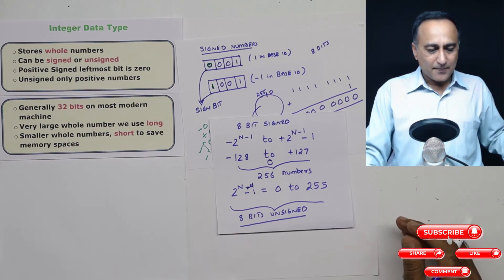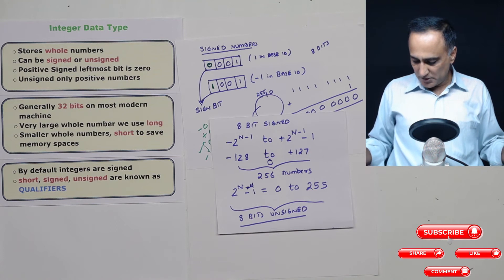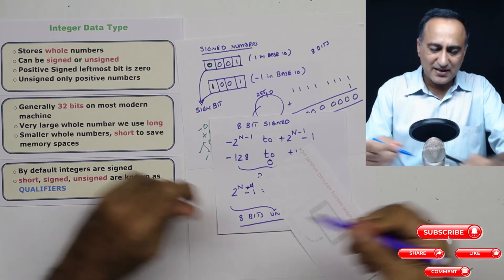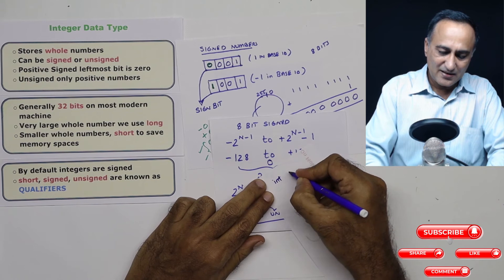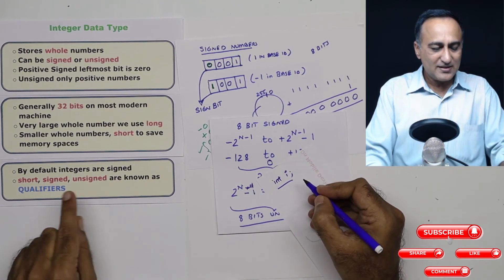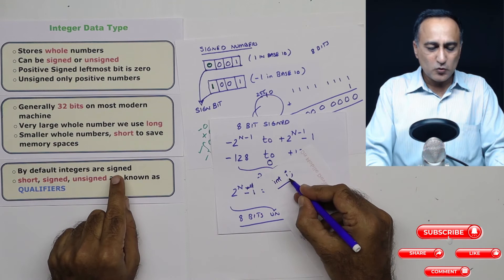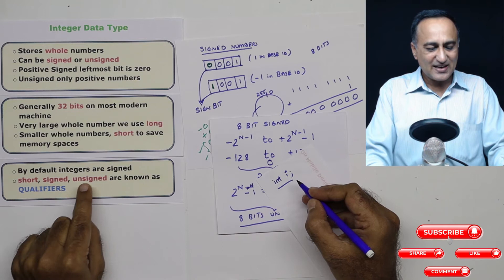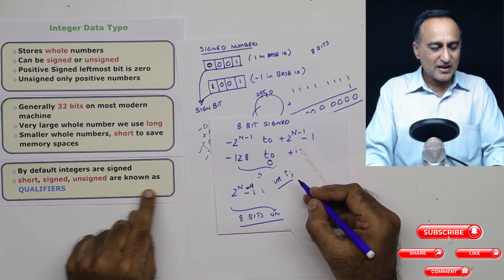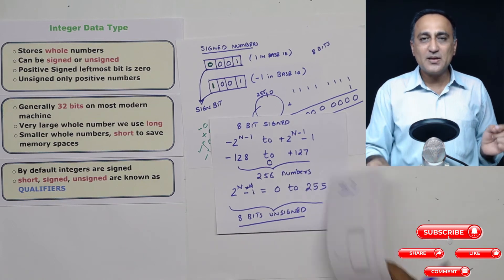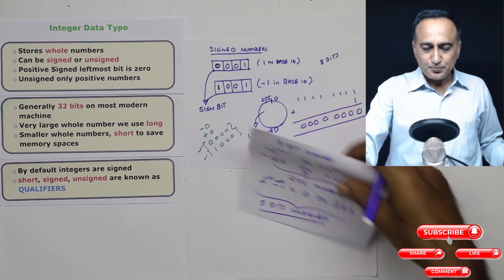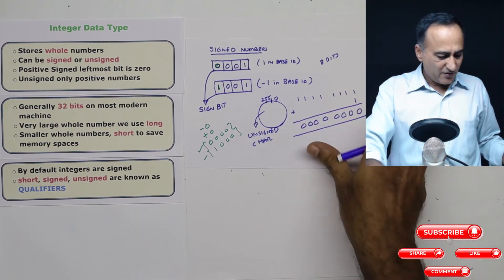Now when you declare an integer variable in a computer, suppose you go ahead and you end up declaring an integer variable, let's say I say something like this: I say int i. By default, this i is assumed to be a signed integer. Now these words short, signed, unsigned, which I will be showing you a few examples, are known as modifiers or qualifiers because they modify the behavior of the integer data type.